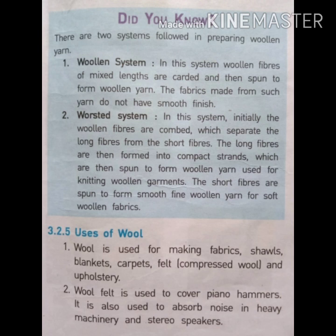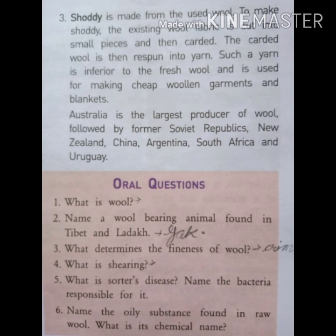An important point to note: the woolen system does not produce smooth-finish fabrics, while the worsted system produces good, smooth fabrics. A third point is shoddy, which is made from used wool. The existing old fibers are cut into small pieces and then carded.